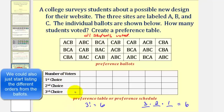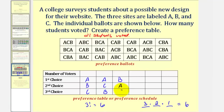Let's begin by listing the six possible orders. Starting with A: A, B, C and A, C, B. Now starting with B: B, A, C and B, C, A. And starting with C: C, A, B and C, B, A.